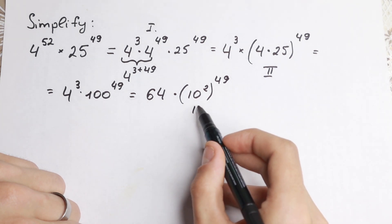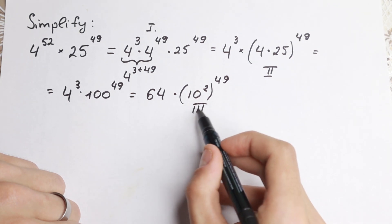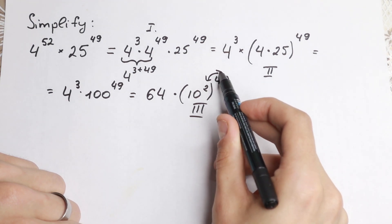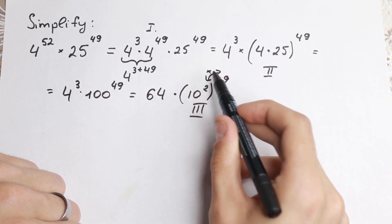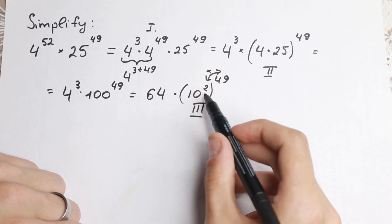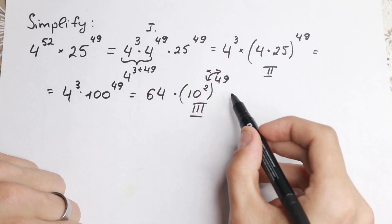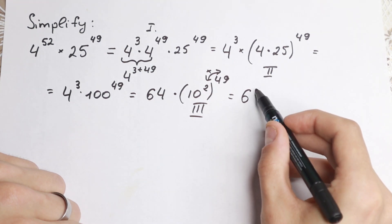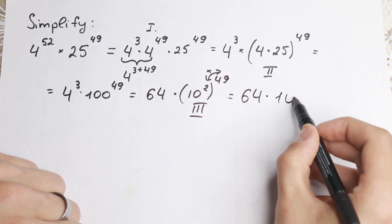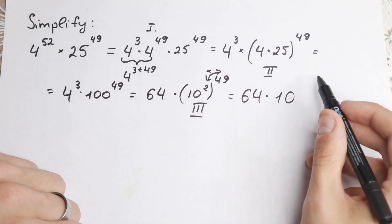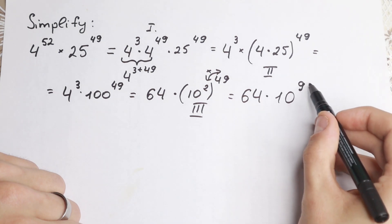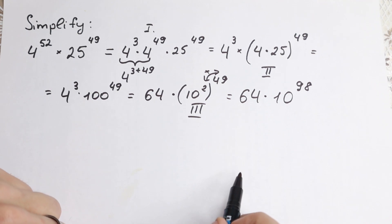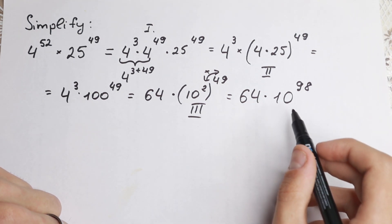Now we apply the third property: when we have a power raised to a power inside parentheses, we multiply the exponents. So we get 64 times 10 to the power of 98. This looks close to our final answer, but we can apply one more simplifying step.